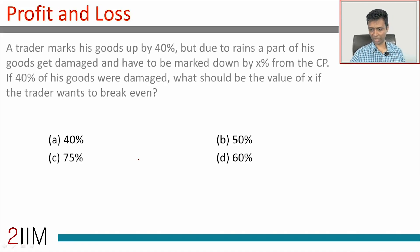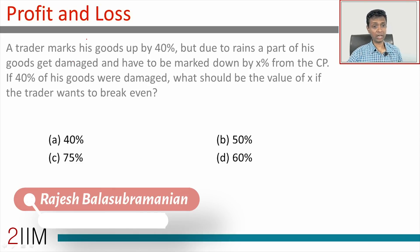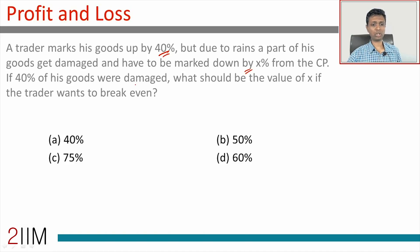It's a very simple question. I'm going to assume that you've read this question and jump directly to the solution. The trader marks his goods up by 40%, but due to rains a part of his goods get damaged and have to be marked down by X percent from the cost price. If 40% of his goods were damaged, what should be the value of X if the trader wants to break even?